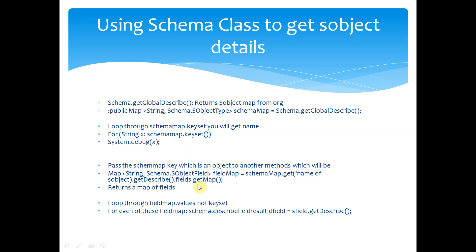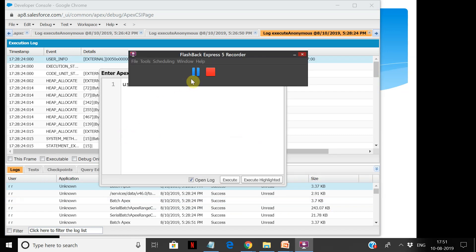The schema map key is an object. Using another method, suppose if you further pass this, what you get is schemaMap.get(nameOfObject).getDescribe().fields.getMap() — you can go through the field level and loop through the field map. Once you get the object, the syntax is a bit complicated but the concept is the same. Schema.getGlobalDescribe() returns objects. From there, you create a map of String and object types, loop through the schema map's SObject types key set, and for each object do Schema.getDescribe() dot get map to get a map of fields. For each field, you can drill down further to get the object field name, API name, and label.